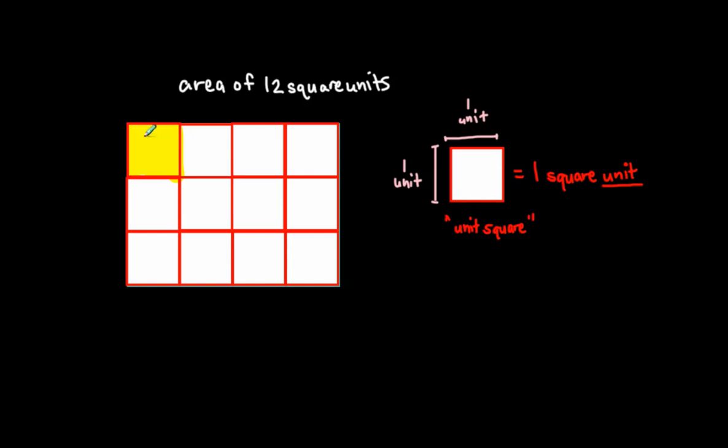So the area of this shape is 1, 2, 3, 4, 5, 6, 7, 8, 9, 10, 11, 12. 12 square units. So the area of this is 12 square units, the area of this rectangle that I placed down originally is 12 square units.